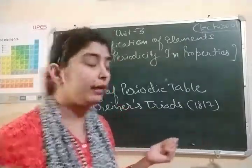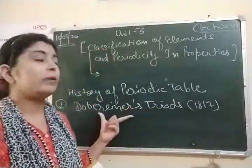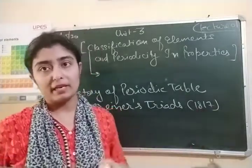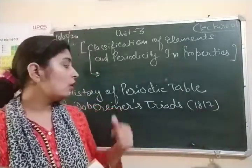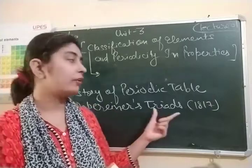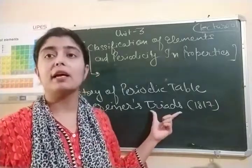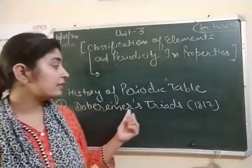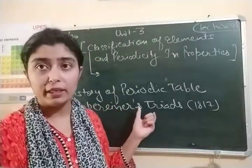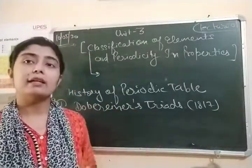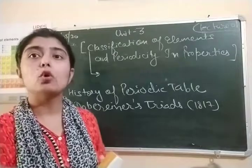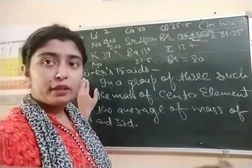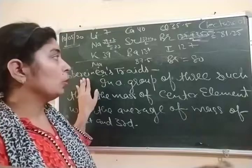So who came first? Dobereiner. When? In 1817, he put forward his concept, which was called Dobereiner's Triads. The name given to his concept was Dobereiner's Triads. So what is the concept of Dobereiner? What do you mean by the term Dobereiner's Triad?